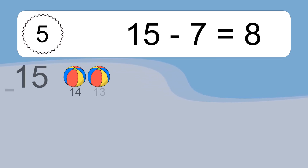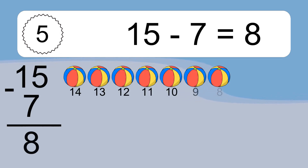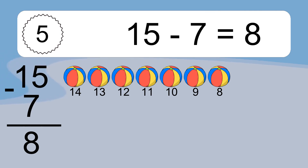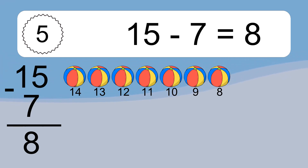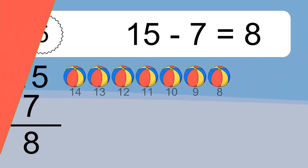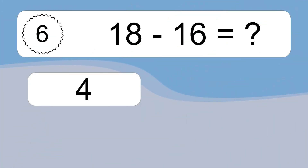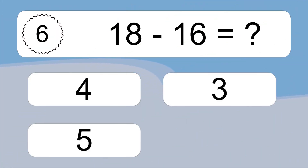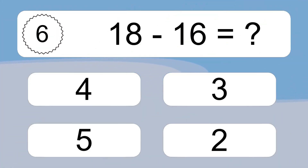15 minus 7 equals what? 15 minus 7 equals 8. Let's count it: 14, 13, 12, 11, 10, 9, 8.